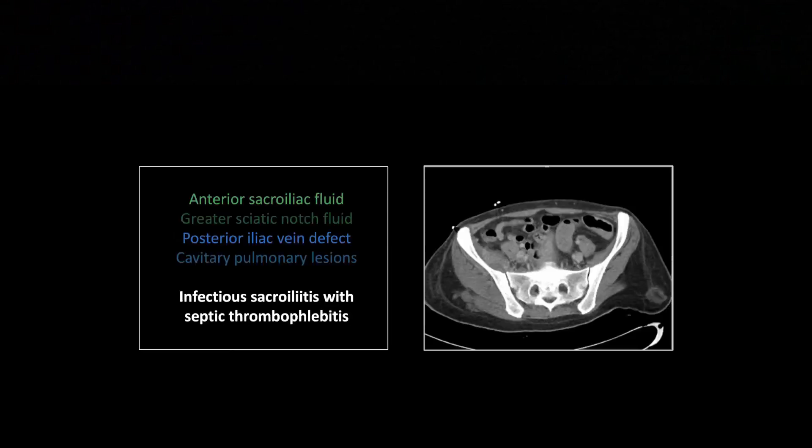This is one of my favorite cases. Going down into the pelvis: there is a fluid collection sitting right there deep to the iliacus muscle, on the anterior aspect of the sacroiliac joint, just anterior to it and extending out laterally, creeping along on the deep aspect of the iliacus right against the ilium. That is the classic location for fluid collections to decompress when originating from the sacroiliac joint.